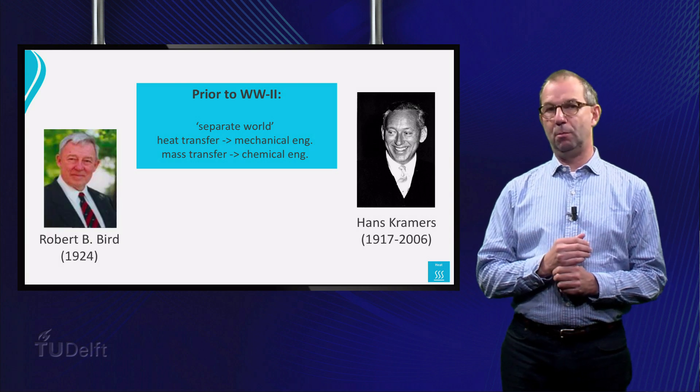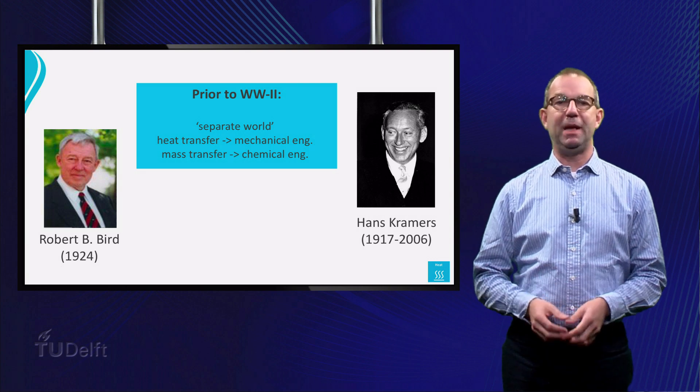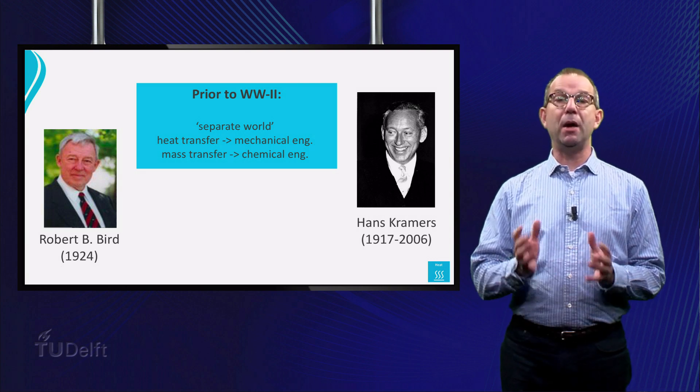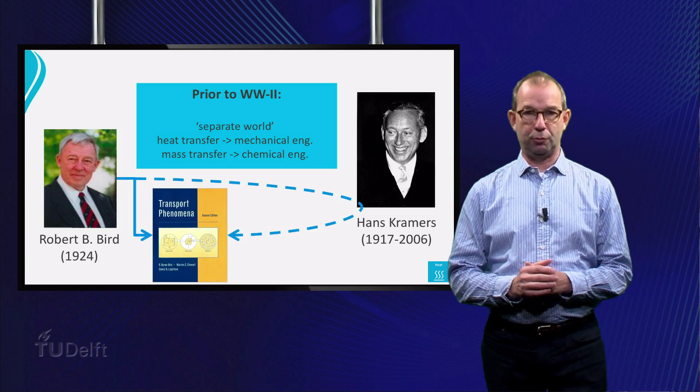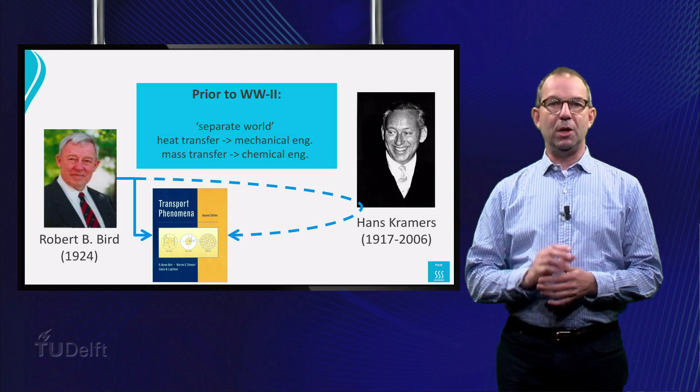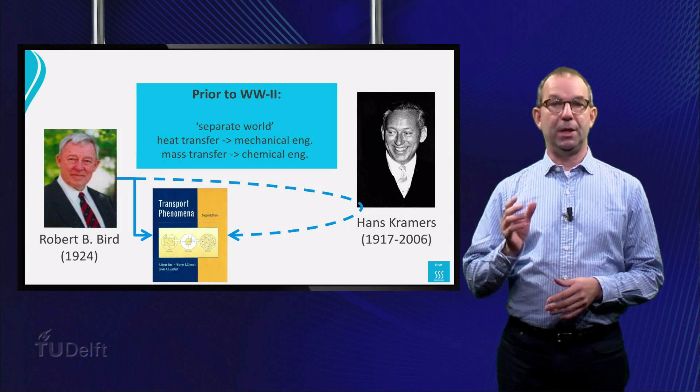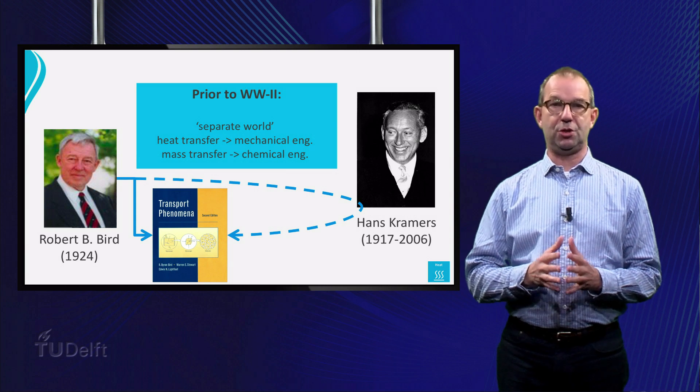In 1958, Bob Byrd from the University of Wisconsin-Madison spent a sabbatical leave at Kramers' lab, and was inspired by Kramers' approach. Back in the US, Byrd wrote one of the standard books in transport phenomena, which is to many not known by its title transport phenomena, but as Byrd, Stewart and Lightfoot, after the three authors of the book.